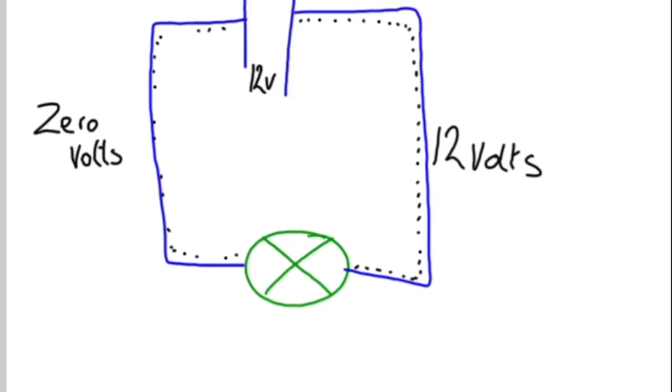And so if we connect a voltmeter across the consumer, across the resistance, so we connect it in parallel. Let's draw that on. There's my voltmeter.